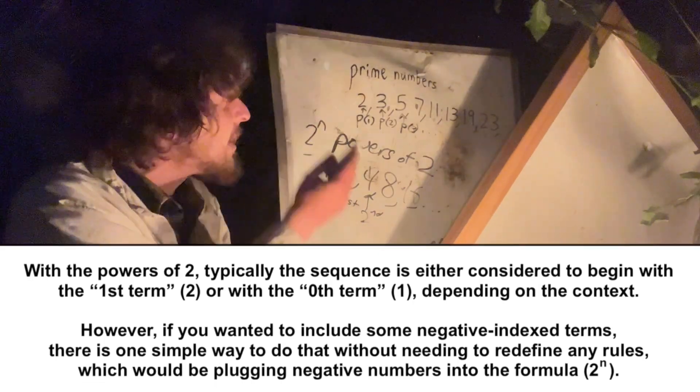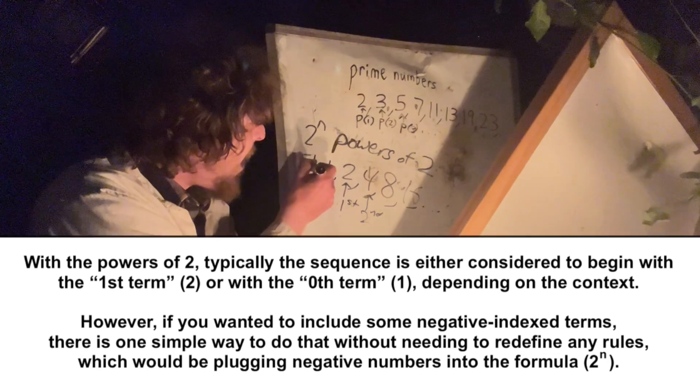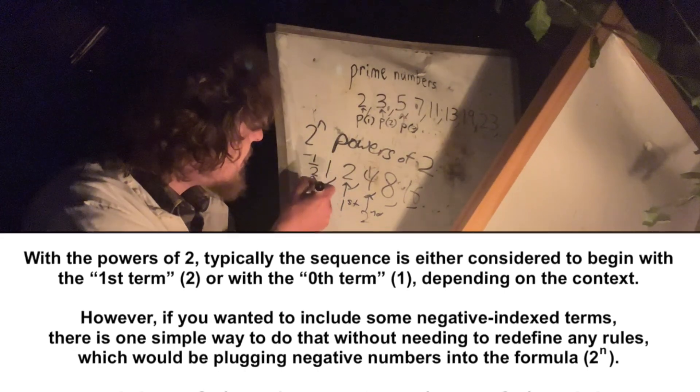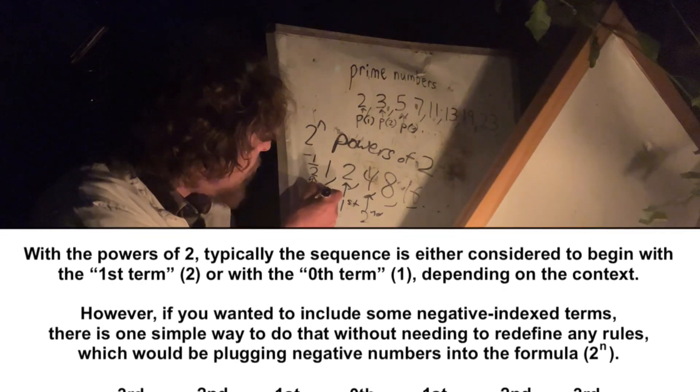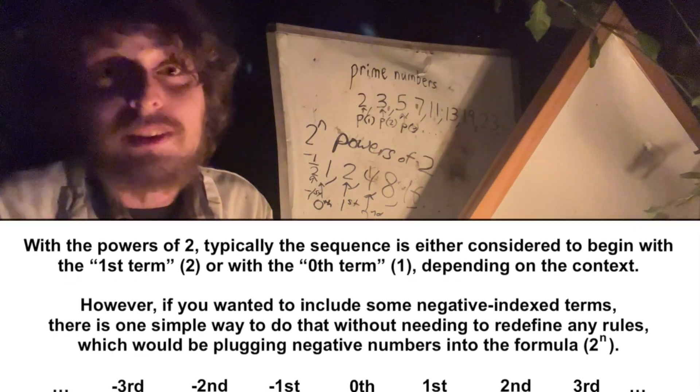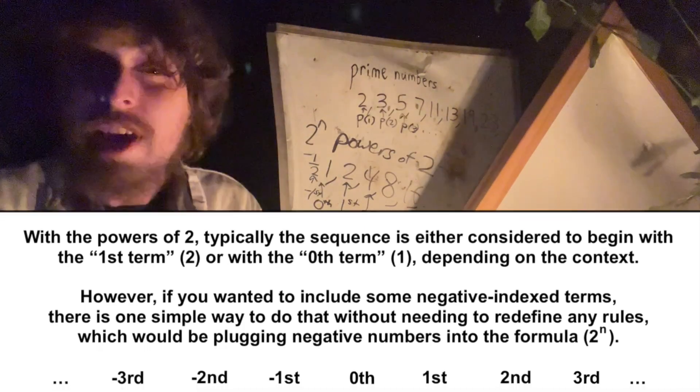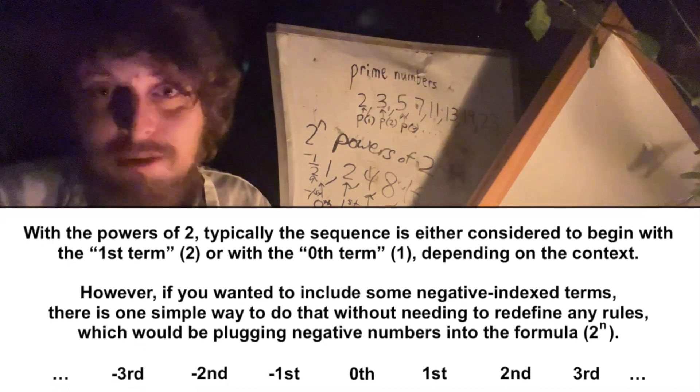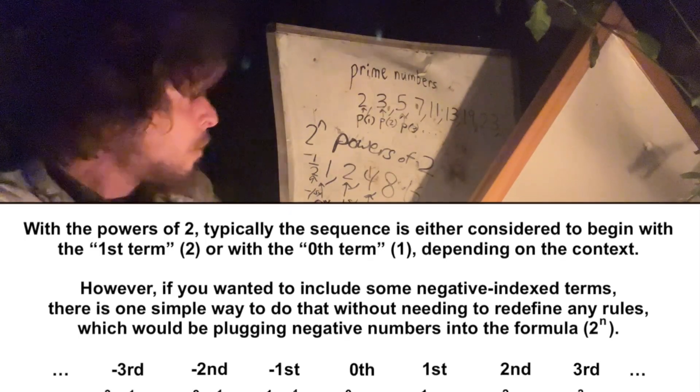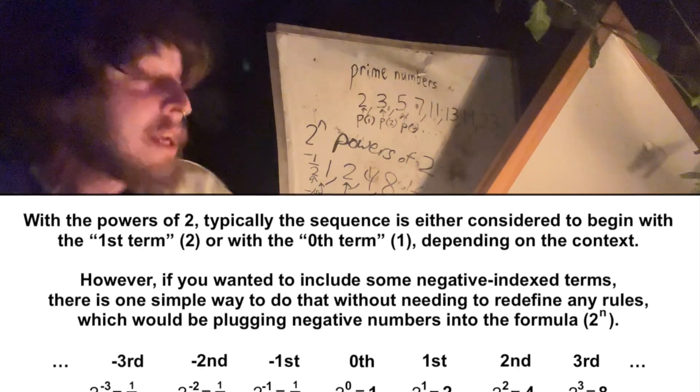Well, we could have a negative indexed one here. I could have one-half is two to the negative first power, and while that wouldn't usually be included in a list of the powers of two without any other specifications, there are times you may want to make those other specifications and say, well, we're actually going to do something with all of the powers of two from, let's say,